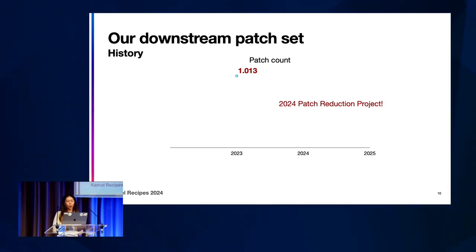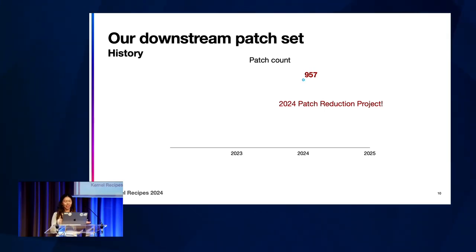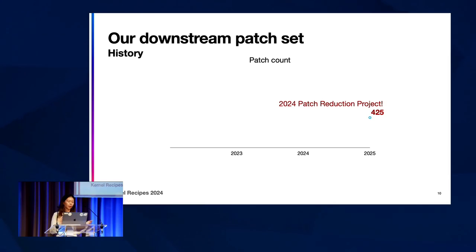The goal is to be very aggressive and try to remove patches. We've been making progress but the slope is not very steep. For 2025, we want to be super aggressive and continue this work, and maybe try to get it to a point where it's half the size.